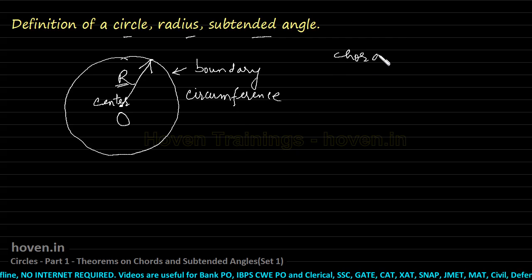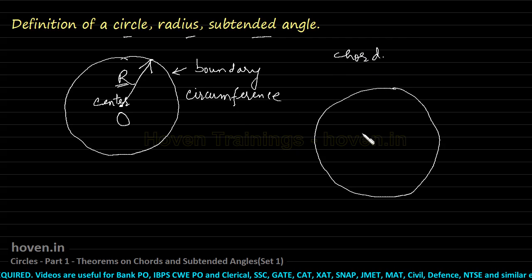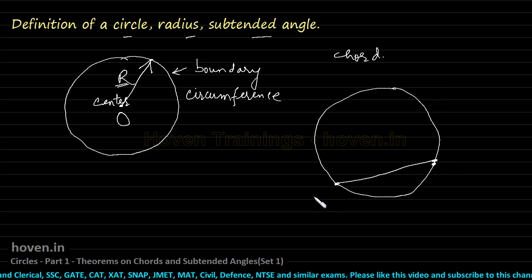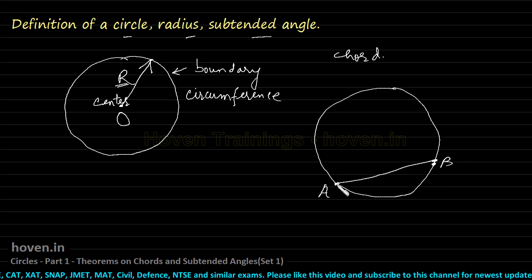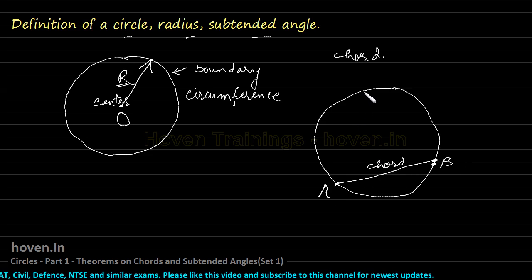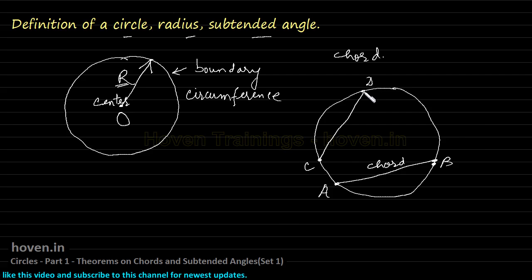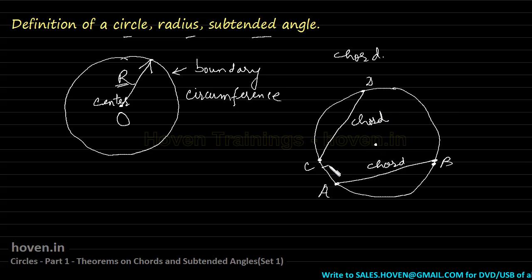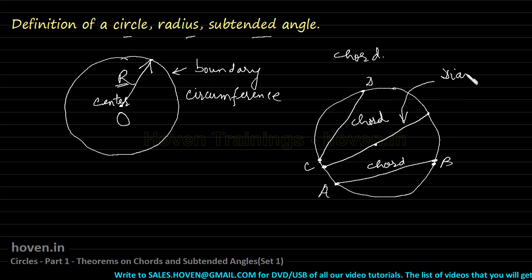Next, we take up what is a chord. If we have a circle, then any segment that joins two points on the boundary of a circle is called the chord. We can say that AB is a chord of this circle. This is another chord CD, because it also joins two points C and D on the periphery of the circle.